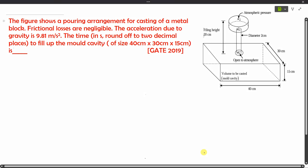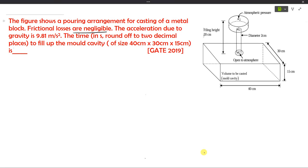The figure shows a pouring arrangement of a casting of a metal block. Frictional losses are negligible and the acceleration due to gravity is given as 9.81 meters per second squared. We need to find the time to fill the mold cavity. The mold cavity dimensions are given.